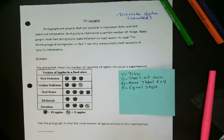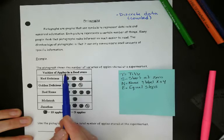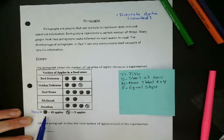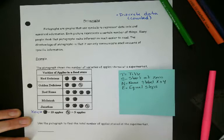So for example, the pictograph shows a number of varieties of apples stored at a supermarket. So here's your title, apples in a food store, and here are the different types. And then here's the key. So a full apple that's colored in is 10 apples, and a half, an apple cut in half is 5 apples.